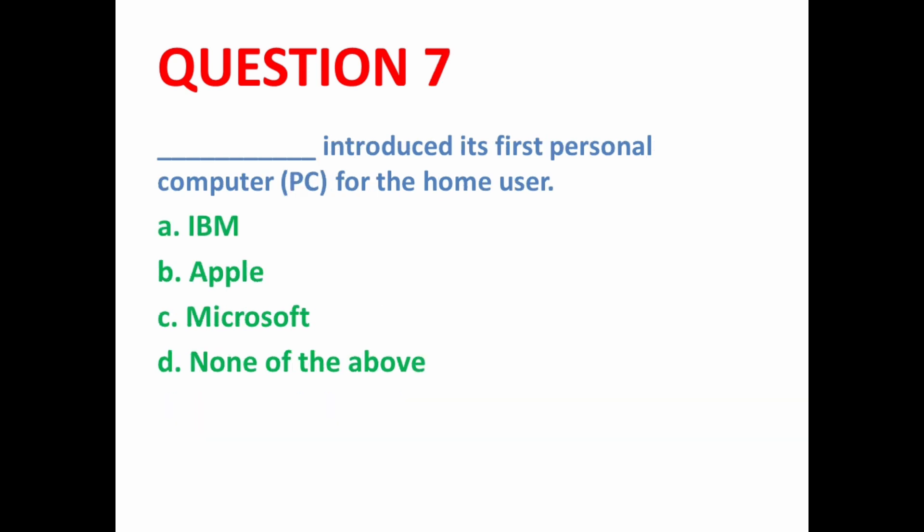Next MCQ: Dash introduced its first personal computer for home users. Three companies are given: IBM, Apple, and Microsoft. The correct option is option A — IBM — which introduced its first PC for home users.